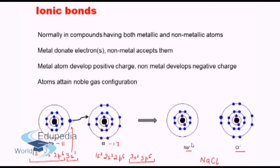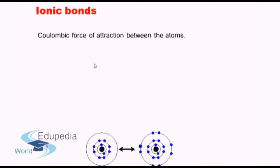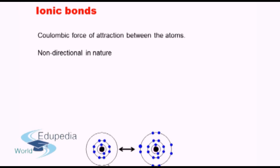This kind of bond developed by transfer of electron from one atom to another is known as an ionic bond, and it helps attain the noble gas configuration. What are the properties of an ionic bond? There is a Coulombic force of attraction between the atoms because there is a positive charge and a negative charge, and that electrical attraction binds the two atoms together. It is non-directional in nature — meaning the chlorine atom can be anywhere around the sodium ion, since charge spreads its attraction in a spherically symmetric manner.